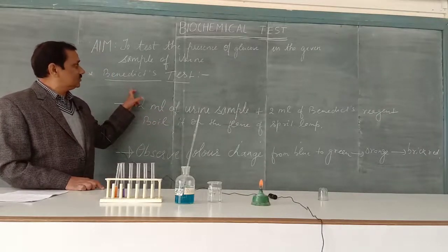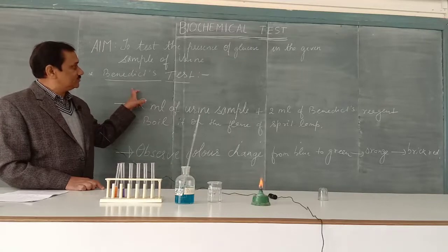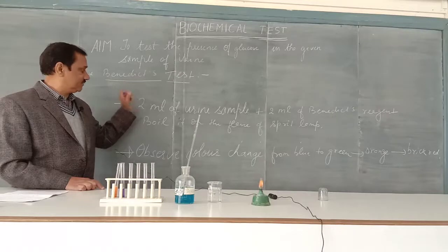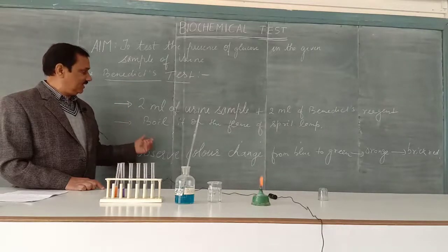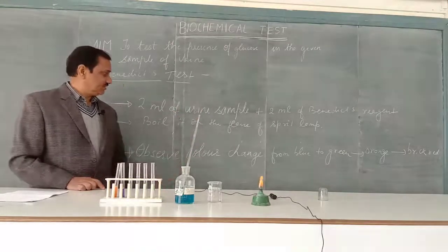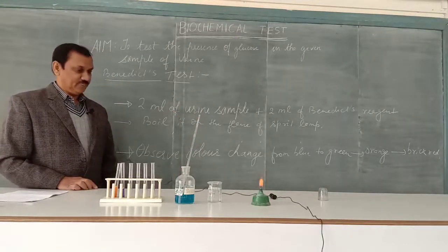The test used to confirm glucose presence in urine is called Benedict's test. To conduct this experiment, we need a sample of urine, Benedict's reagent, a spirit lamp, and a test tube.